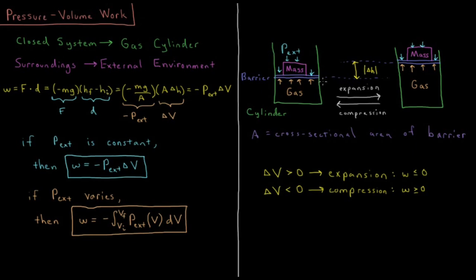During expansion, this would be some positive number. And during compression, this would be some negative number. So it's HF minus HI.